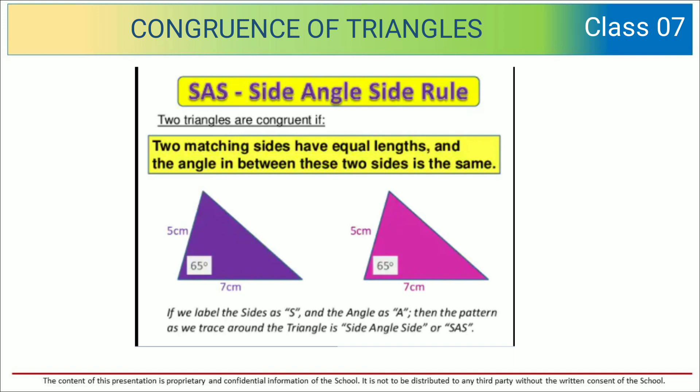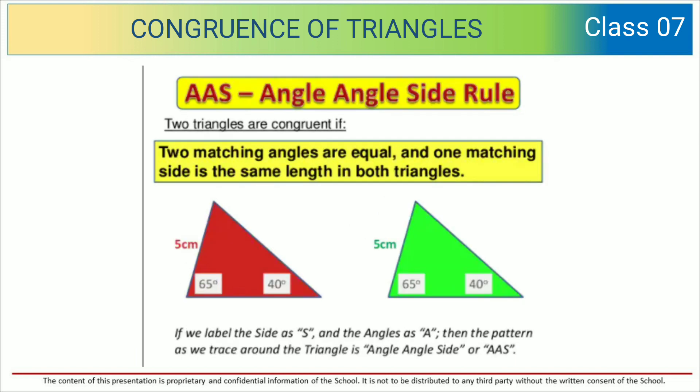5 centimeter side, angle is 65 degrees, and another side is 7. If we label the side as S and angle as A, then the pattern as we trace around the triangle is Side-Angle-Side, or SAS.